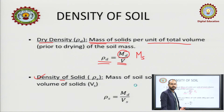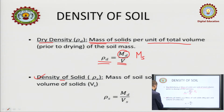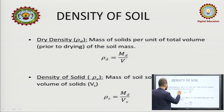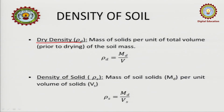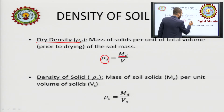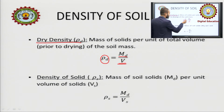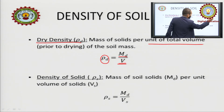Then dry density. What is dry density? You can understand by its name — rho_d means dry. In the dry condition, the total mass will be only due to the soil solids, because air has no mass. So we can write rho_d as md divided by total volume V. Remember that it is calculated according to the total volume.